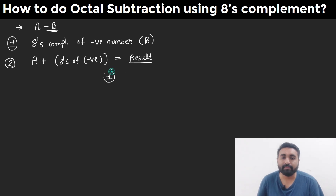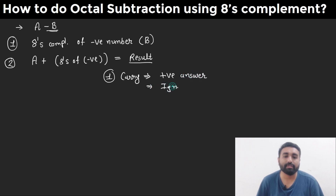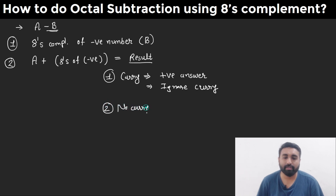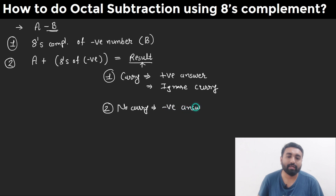Based on the addition result, there are two possibilities. First, if we get a carry, then your answer will be positive, and in this case you need to ignore the carry. Second, if there is no carry in the result, your answer will be negative, and then you need to find the 8's complement of the result — that will be your final answer.